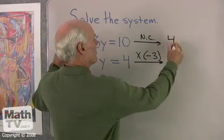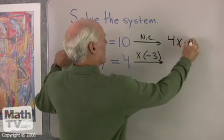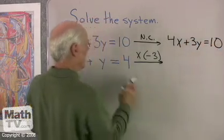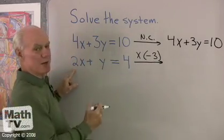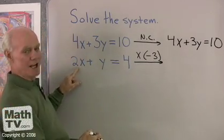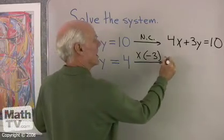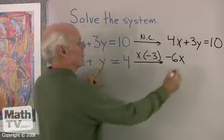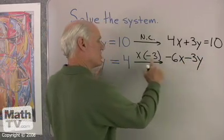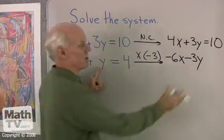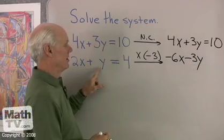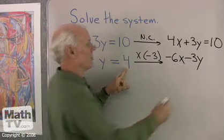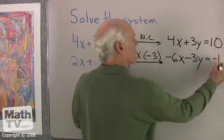so I'll just say nc for no change. So this equation becomes 4x plus 3y is equal to 10. And this equation, when I multiply both sides by negative 3, is going to be negative 3 times 2x will be negative 6x. Negative 3 times y will be negative 3y. That's why we chose negative 3 to multiply by, so we would get a negative 3y right here. We don't want to forget to multiply this side by negative 3 also, equals negative 12.